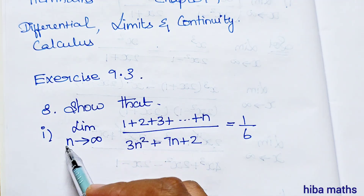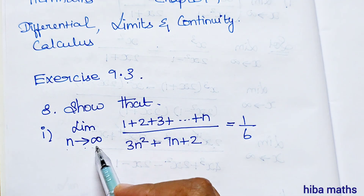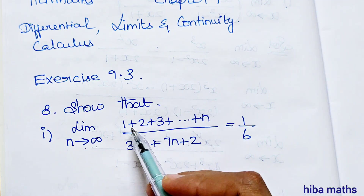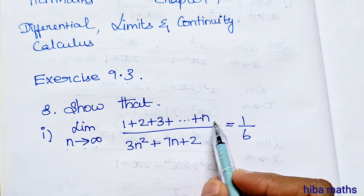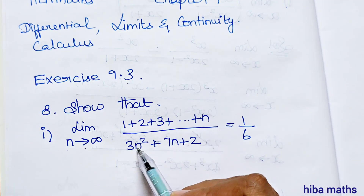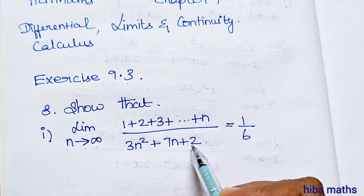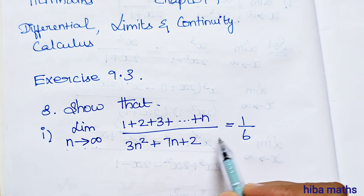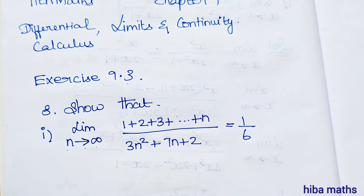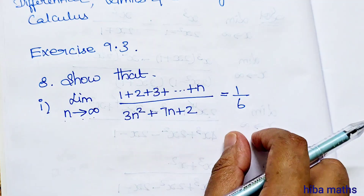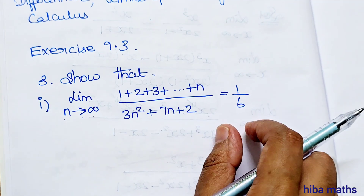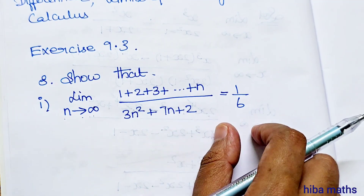Show that the limit as n turns to infinity of 1 plus 2 plus 3 up to n, divided by 3n squared plus 7n plus 2, is equal to 1 by 6. So this is a proof.